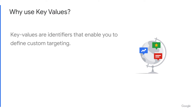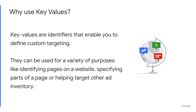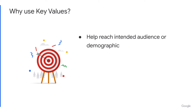In Google Ad Manager, you can create, market, and reach audiences with key values. Key values are identifiers that enable you to define custom targeting. They can be used for a variety of purposes, like identifying pages on a website, specifying parts of a page, or helping target other ad inventory. They can also be based on information you've gathered about people who visit your website or app, to target ads based on that information.